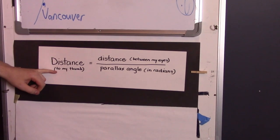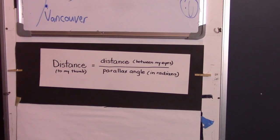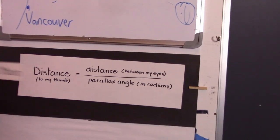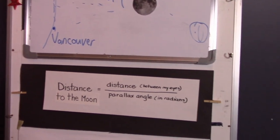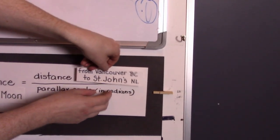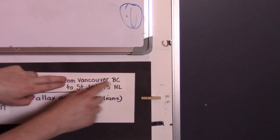Except instead of the distance to my thumb, it's actually the distance to the Moon. And instead of the distance between my eyes, it's actually the distance from Vancouver to St. John's.